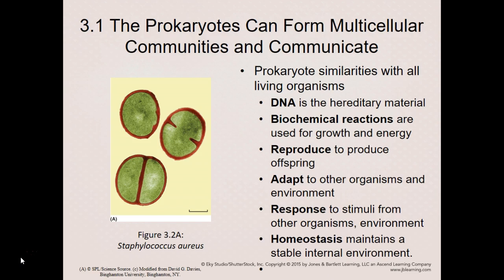Prokaryotic organisms have similar characteristics to eukaryotes — basic things that pretty much all living things have in common. We all have DNA as our hereditary material. We all undergo metabolic reactions — biochemical reactions that allow us to grow, replicate, produce energy, and get rid of waste products. We all reproduce. We have to be able to adapt to the environment. Darwin stated that the best adapted to the environment will be able to reproduce and pass on their genes — that is survival of the fittest.